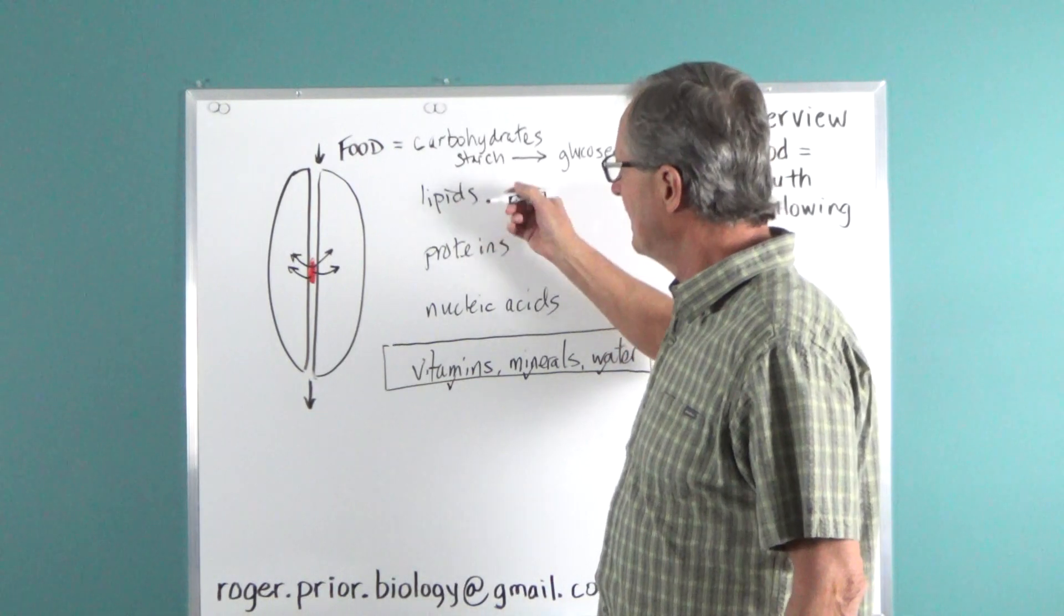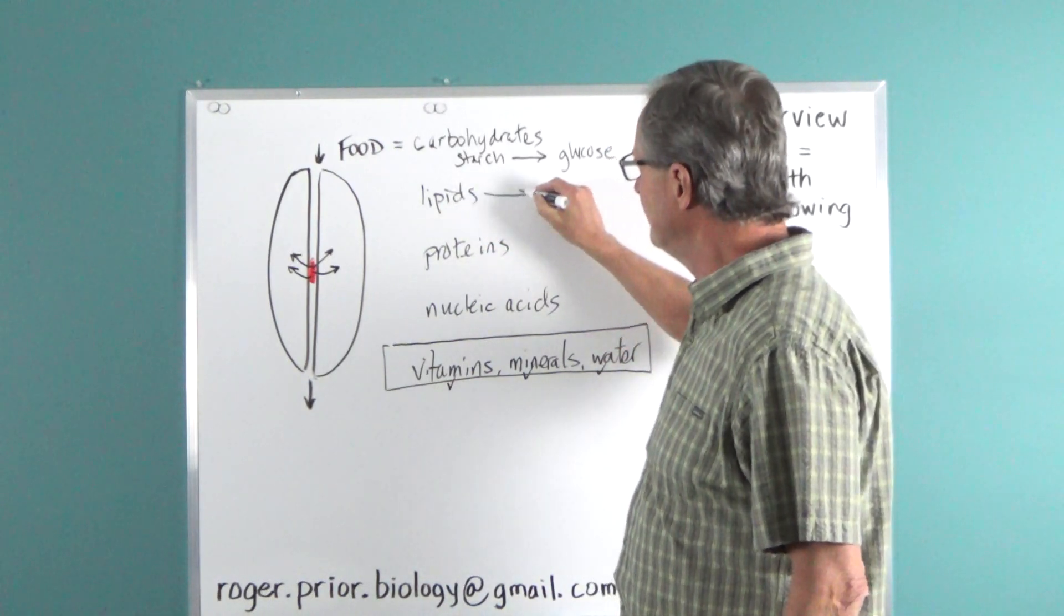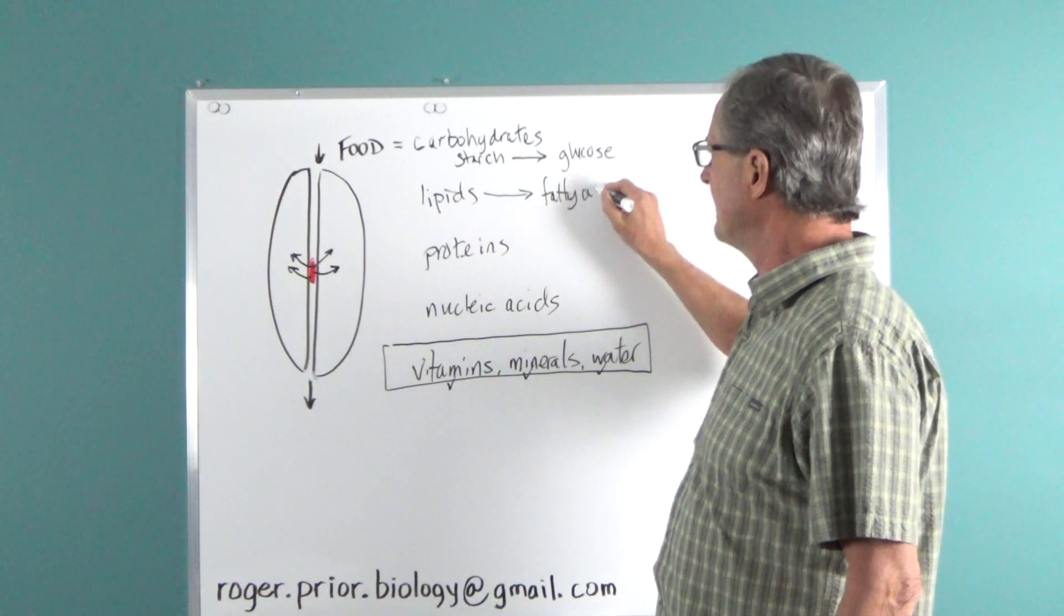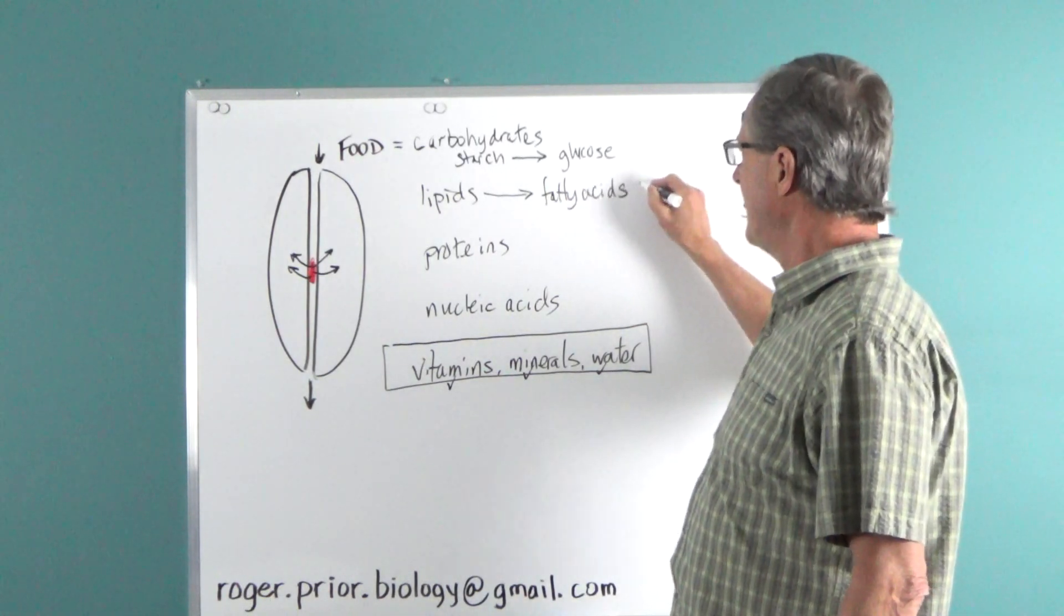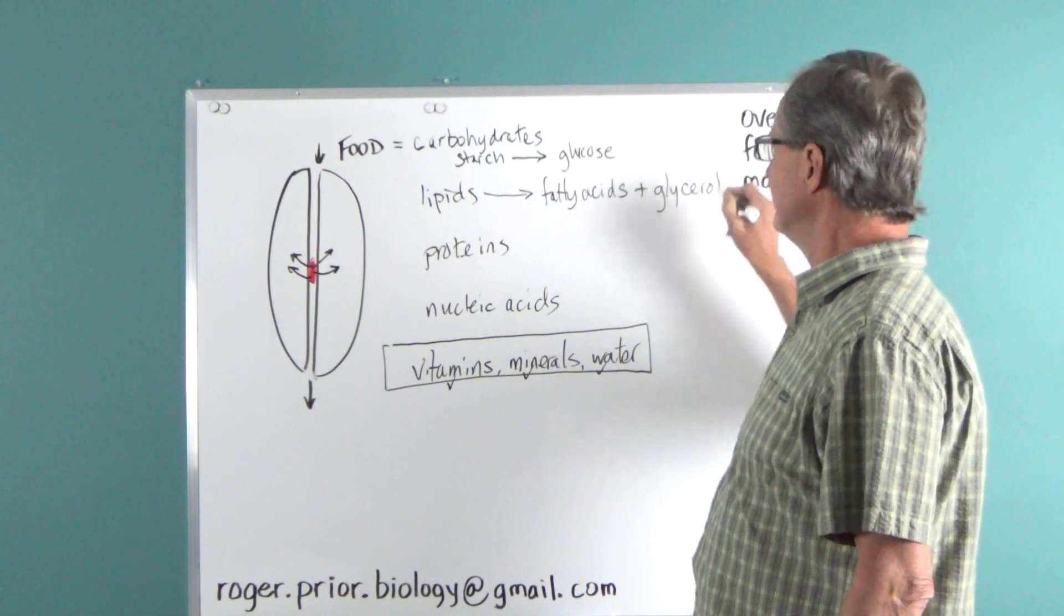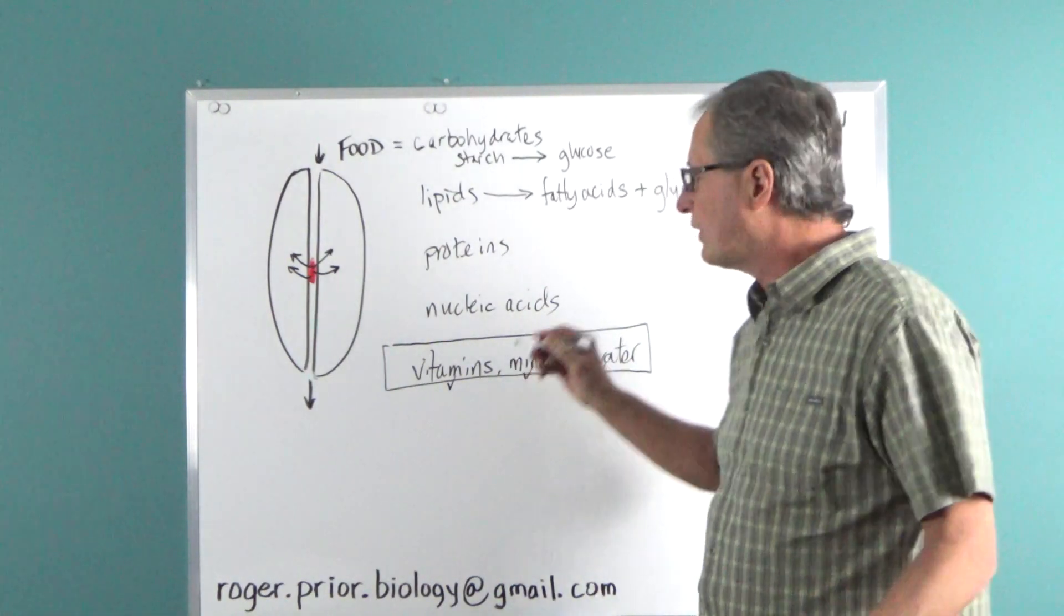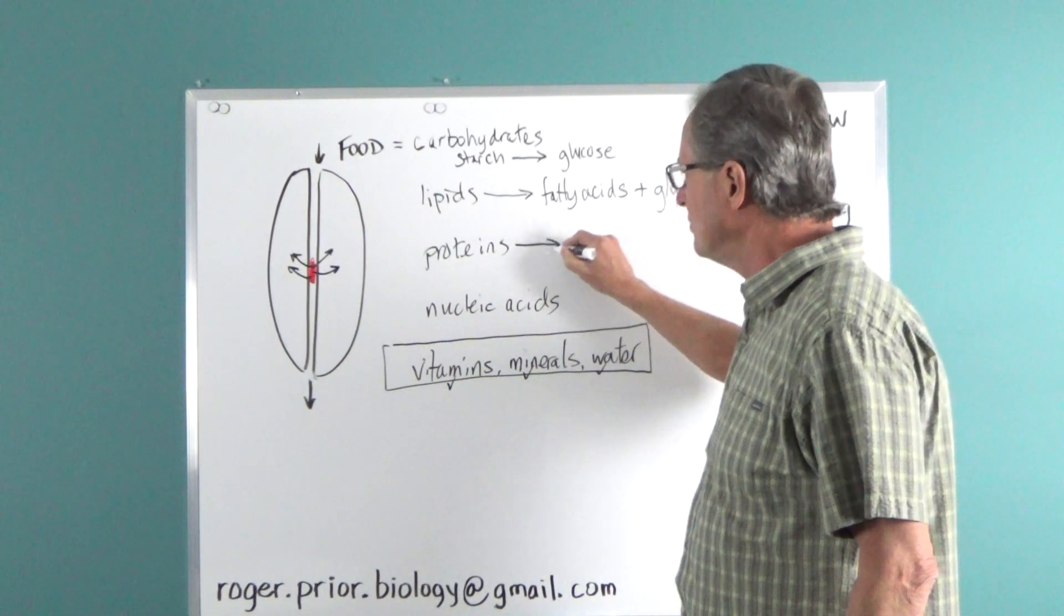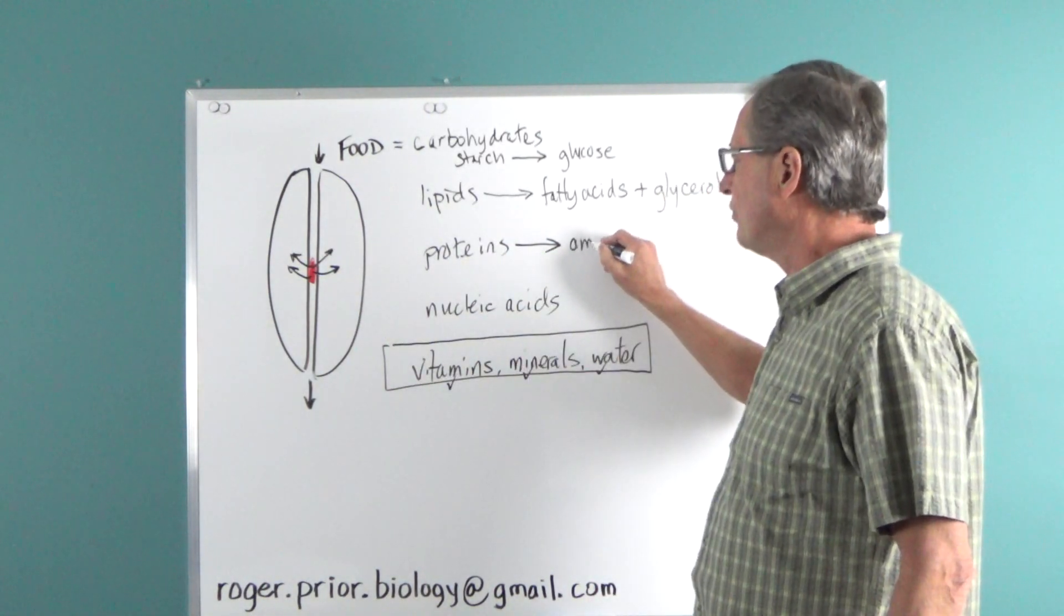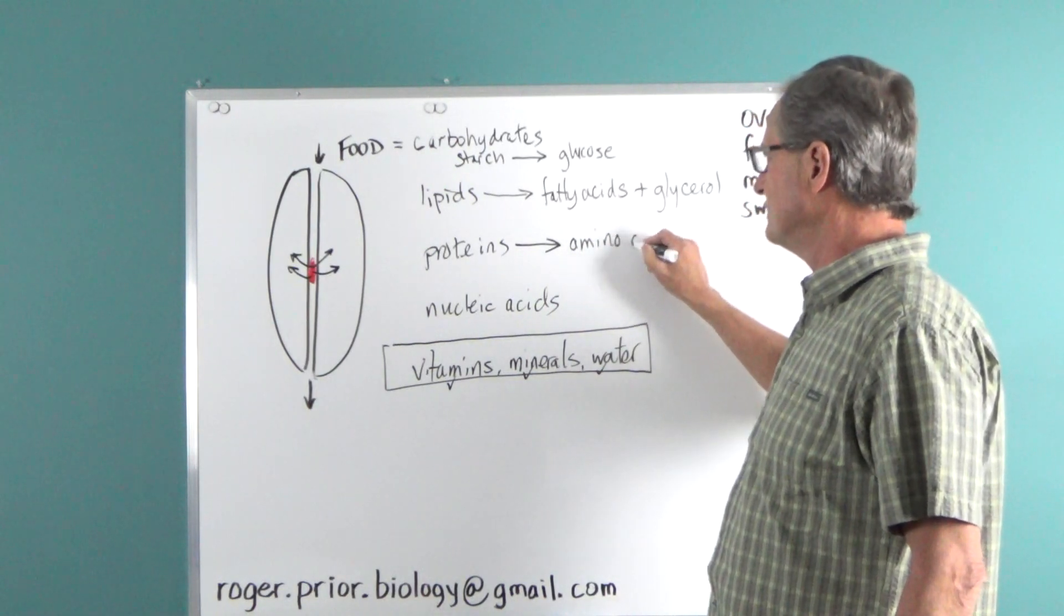Similarly, lipids have to be broken down into fatty acids and glycerol. And by the same token, proteins are way too big to get into cells. They have to be broken down into their component molecules, which are amino acids.